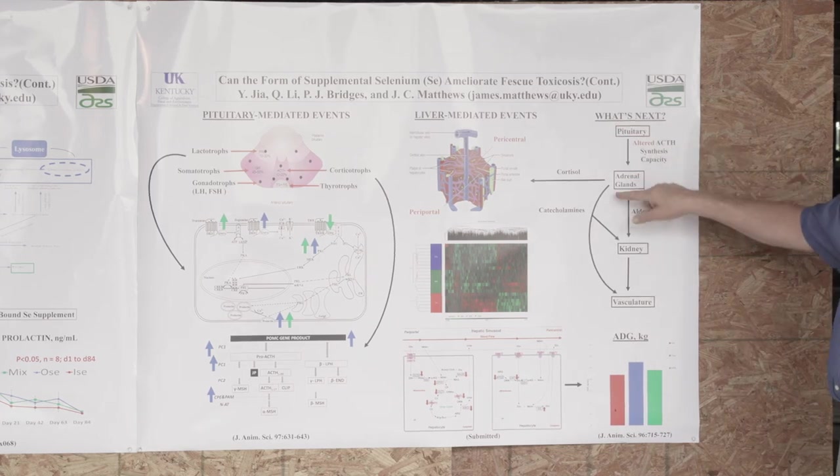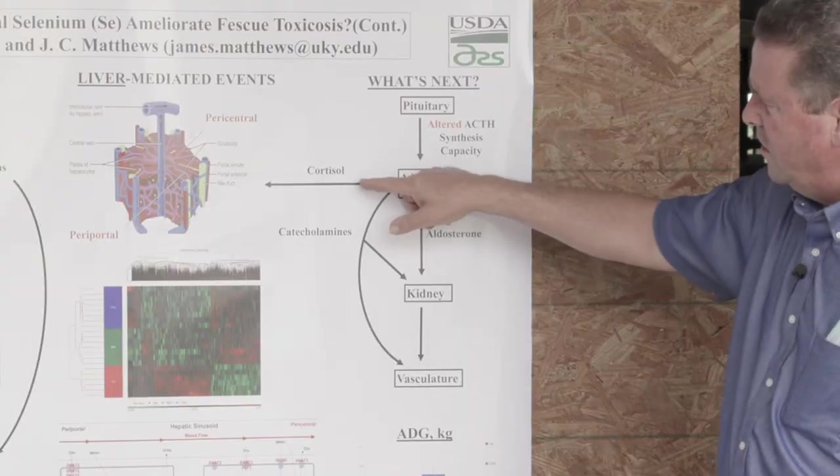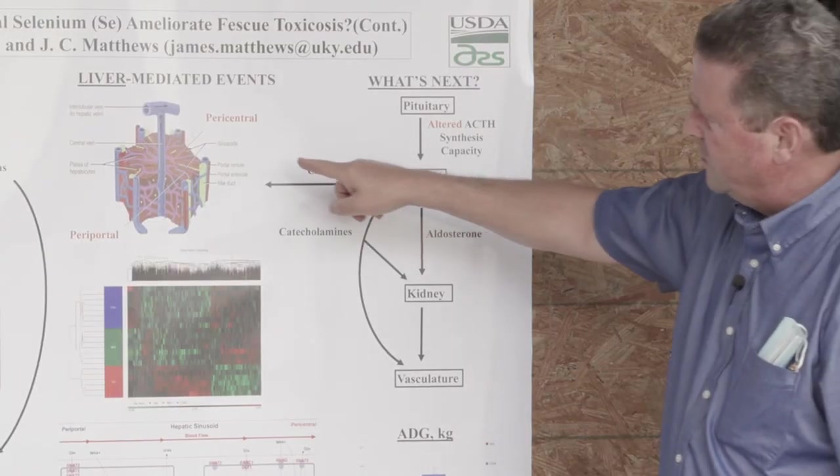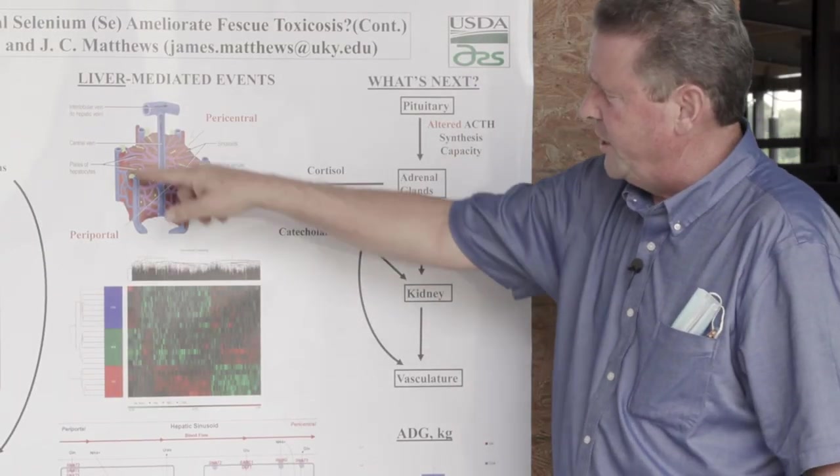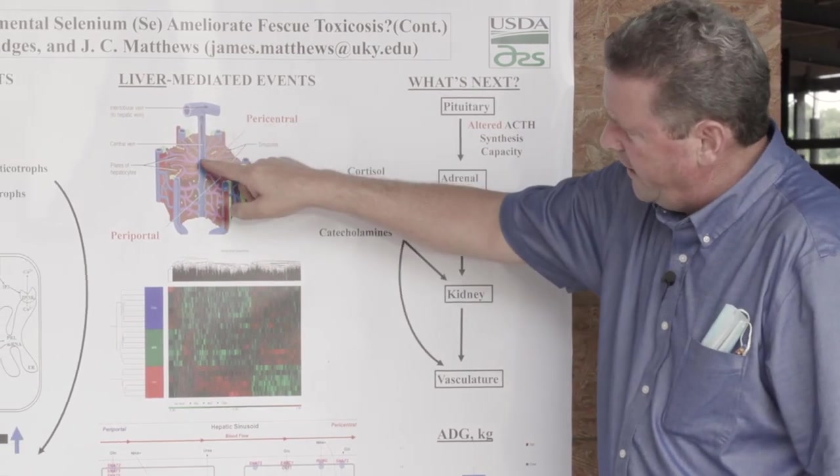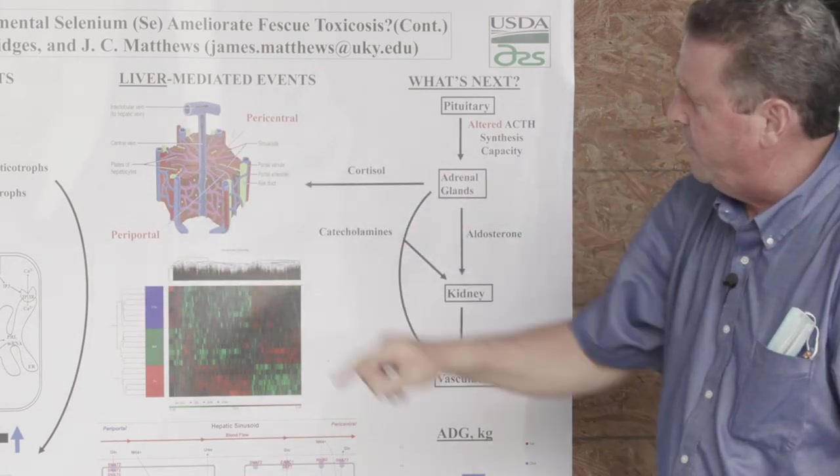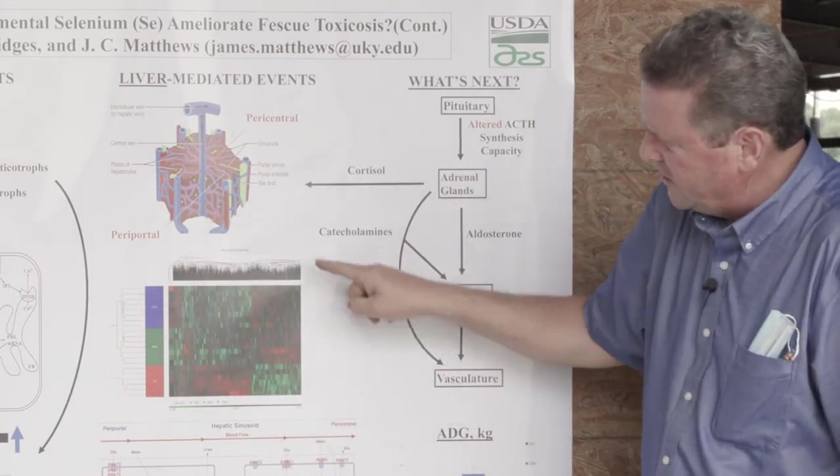Adrenal glands have three main hormones that we look at. One is cortisol. Cortisol is going to trigger metabolic changes in the liver. And so, we went ahead with the same, the liver from the same steers as the pituitary, and that we're grazing the pasture, and we conducted a genomic analysis.